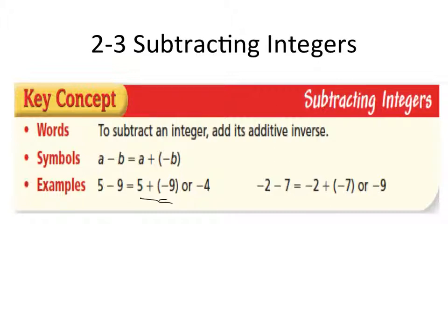In our second example, you see negative 2 minus 7. We're going to change that subtraction sign into a positive. We're going to take our 7, which is positive, and change it into a negative 7. And then we're going to use the rules as we learned in lesson 2-2 for addition of integers to solve our problem. Let's go ahead and try a couple of these problems on the next slide.